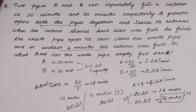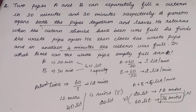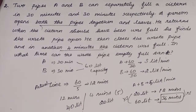We need to find out how long the waste pipe takes to empty the full 60-liter tank. The waste pipe empties 60 liters, and based on the calculation, the answer is 36 minutes. So the waste pipe can empty the full tank in 36 minutes.